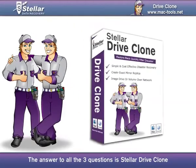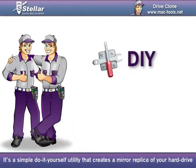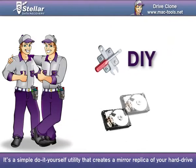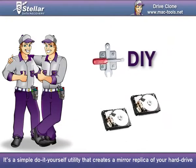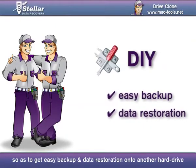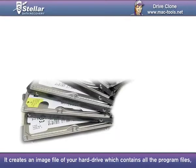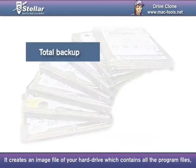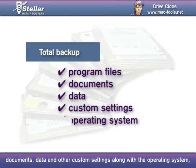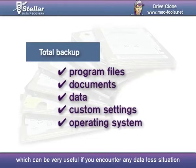The answer to all the three questions is Stellar Drive Clone. It's a simple do-it-yourself utility that creates a mirror replica of your hard drive so as to get easy backup and data restoration onto another hard drive. It creates an image file of your hard drive which contains all the program files, documents, data, and other custom settings along with the operating system, which can be very useful if you encounter any data loss situation.